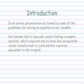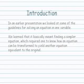In an earlier presentation, we looked at some of the guidelines for solving an equation in one variable, and we learned that it basically meant finding a simpler equation, which required one to know how an equation could be transformed to yield another equation equivalent to the original.